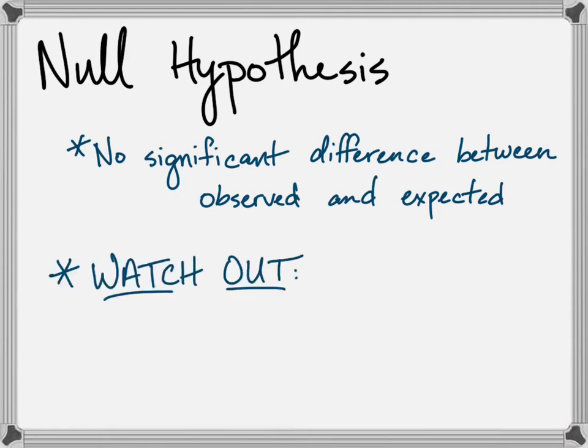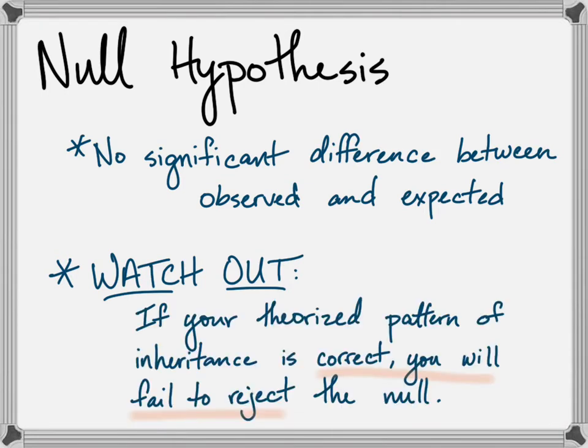What's always weird to students is that you normally want to reject the null hypothesis, right? You're seeking some difference. But in genetics, failing to reject the null is more often the goal. It means the pattern of inheritance you predicted is a good fit.